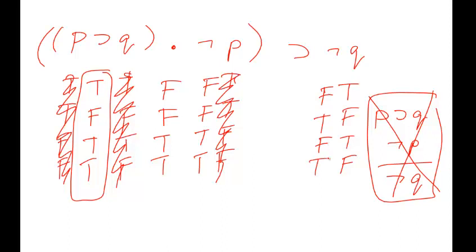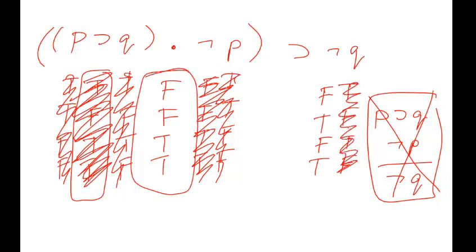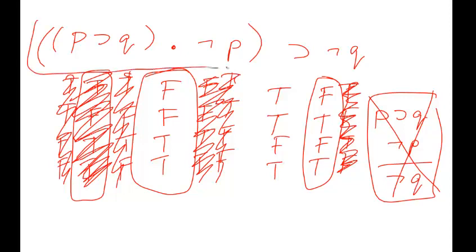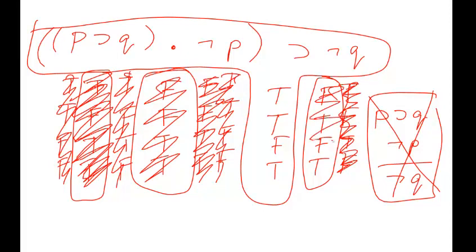Now evaluating the full conditional, joining the antecedent F, F, T, T with the consequent F, T, F, T: F→F = T; F→T = T; T→F = F; T→T = T. The total value is T, T, F, T. This is not a valid schema — it's not always true.